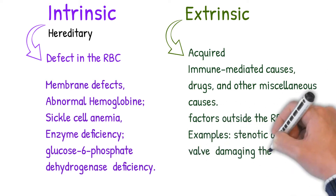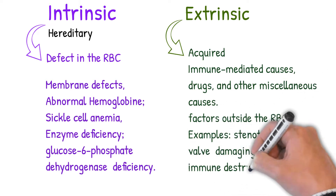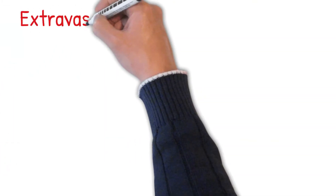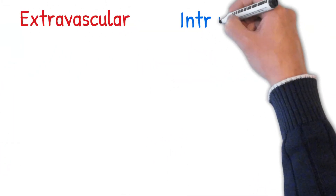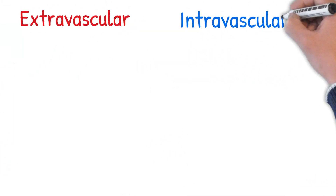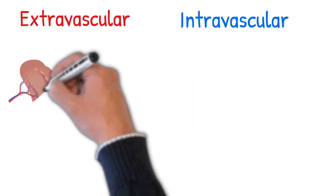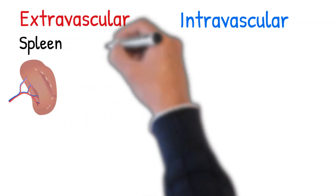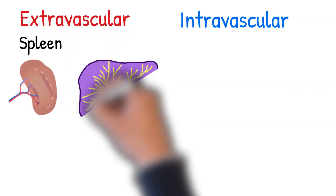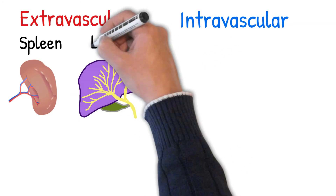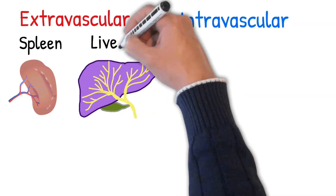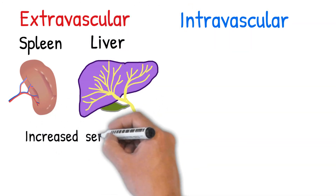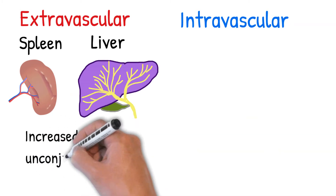Examples of extrinsic causes include a stenotic aortic valve damaging the RBCs and immune destruction of RBCs. Hemolytic anemia can be extravascular or intravascular. Extravascular refers to destruction of RBCs within splenic and/or liver macrophages, characterized by increased serum unconjugated bilirubin, which produces jaundice if the bilirubin level is greater than 2.5 mg/dL.